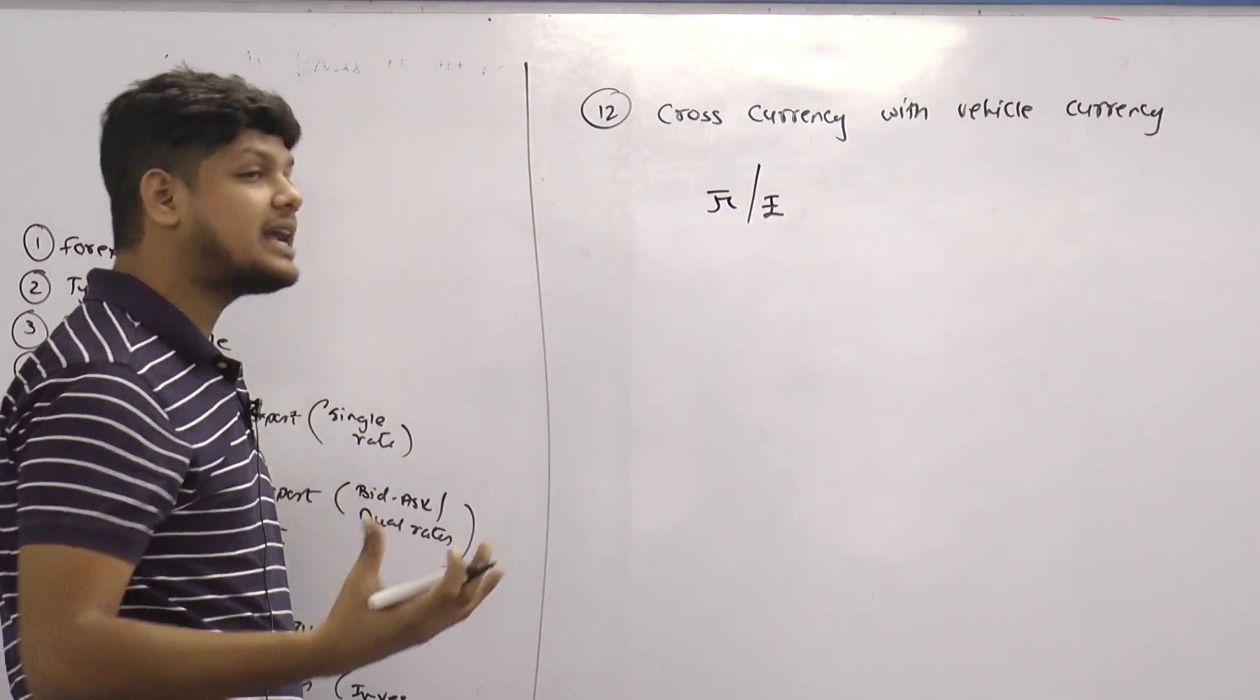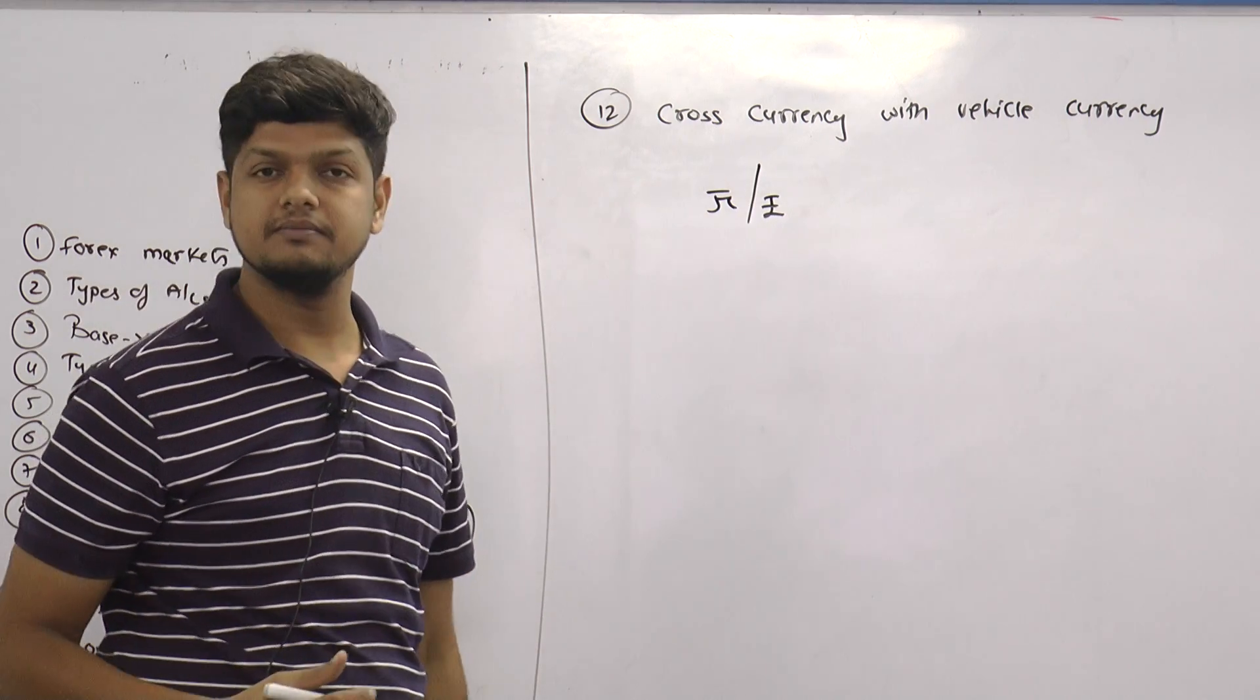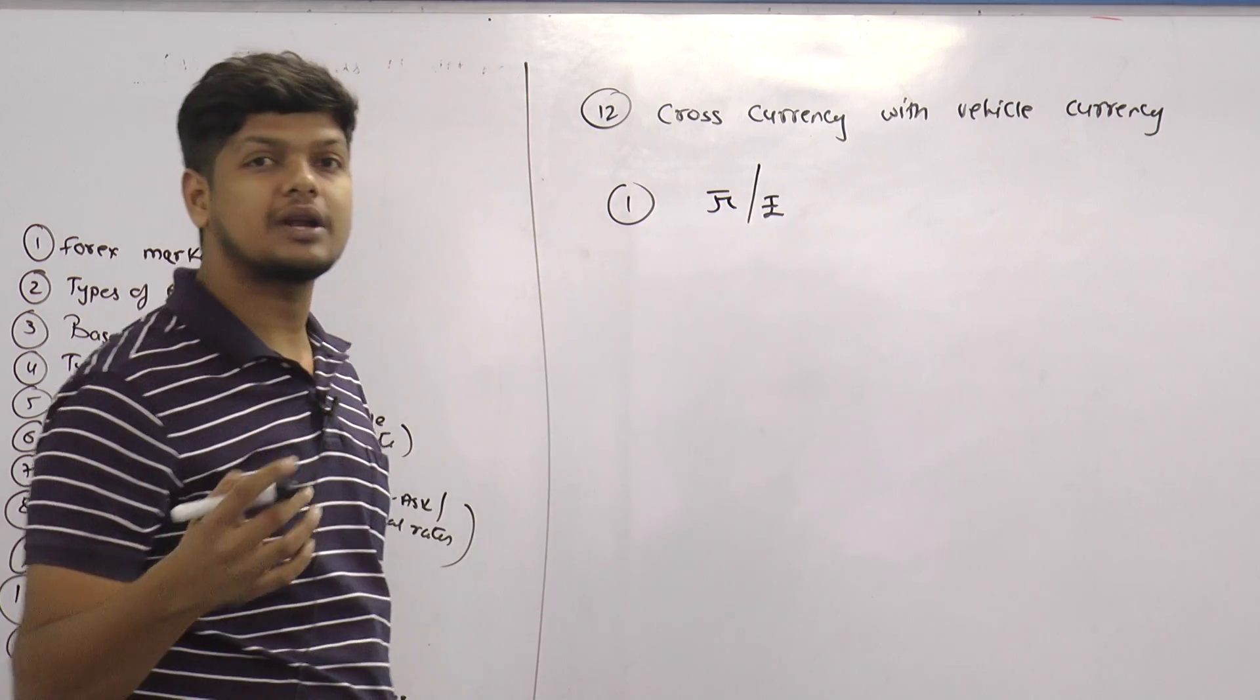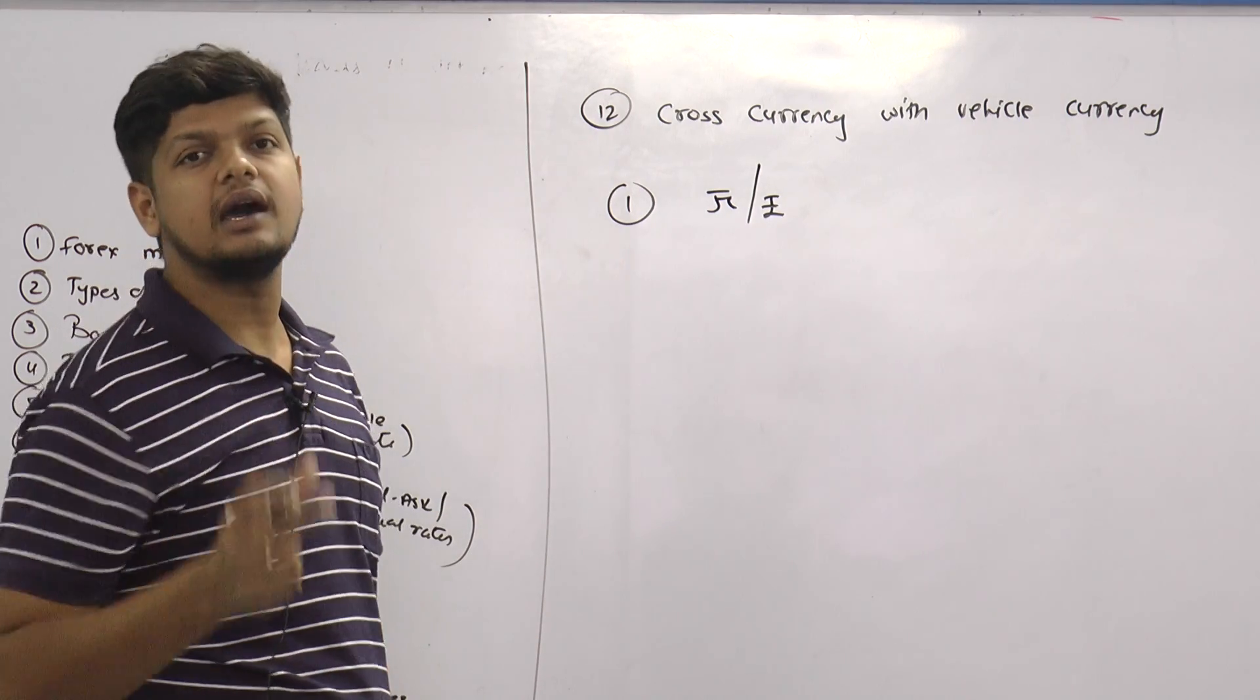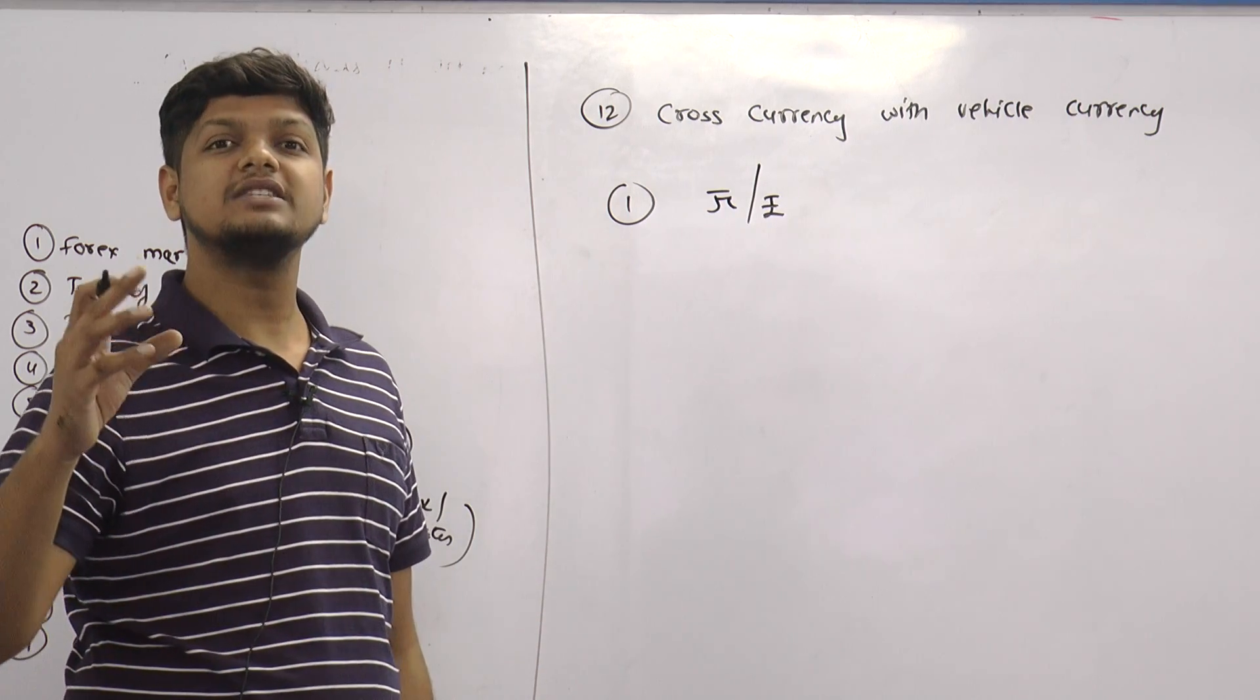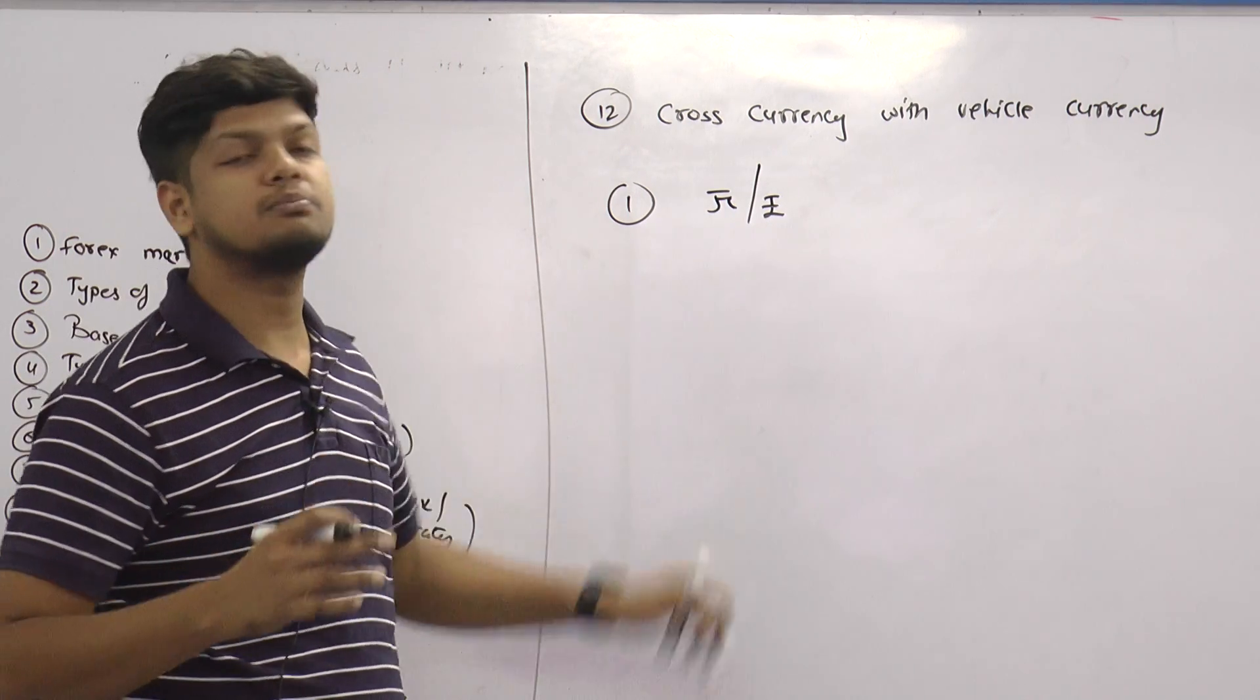So I may not directly get a rate between Yuan and Rupee. So in that condition what should I do? I should rather find a middle currency or vehicle currency.